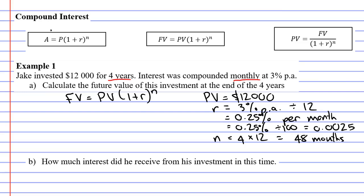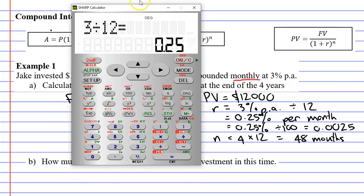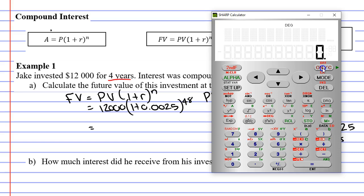Let's now substitute into our formula here. Our present value was $12,000. One plus our interest rate was 0.25%, but we write it as a decimal, 0.0025, and we put this to the power of N, which is 48 months. Now what we need to do is take out our calculator and just type it in and work it out.